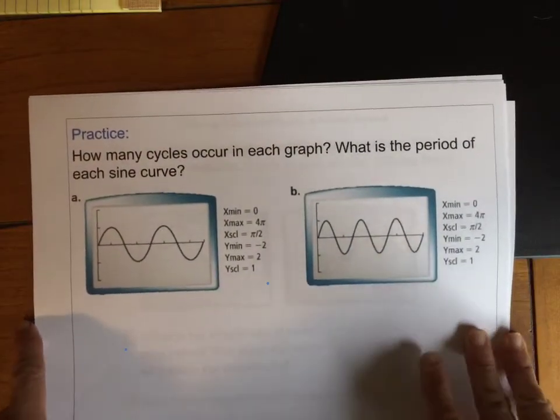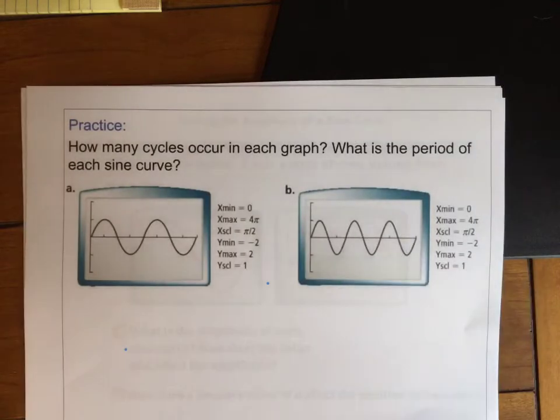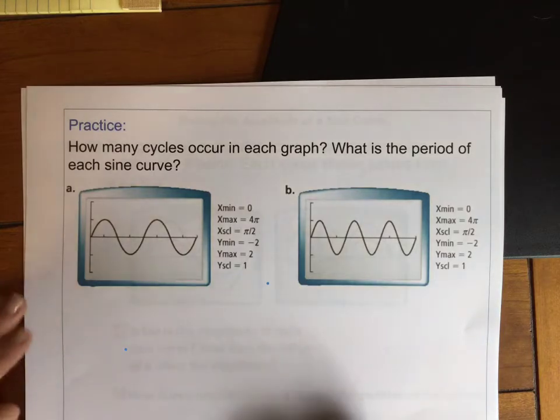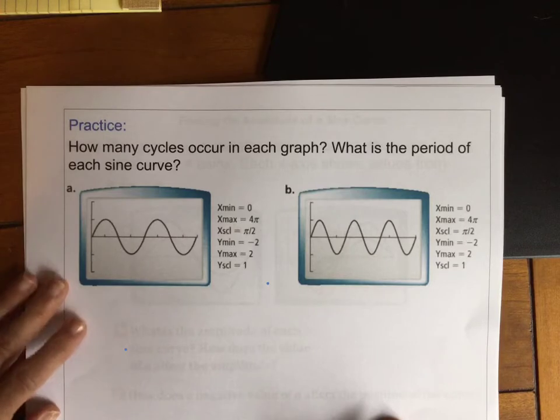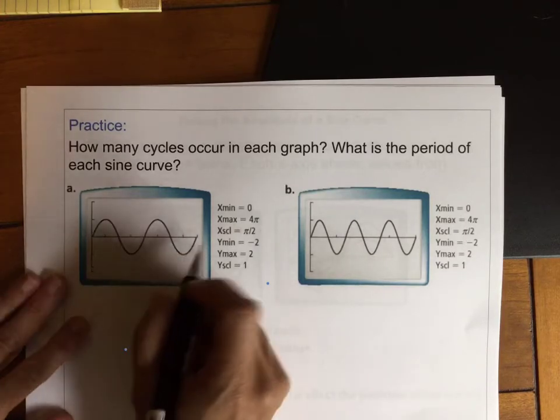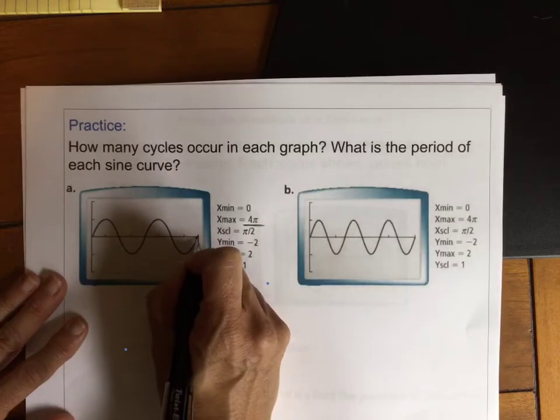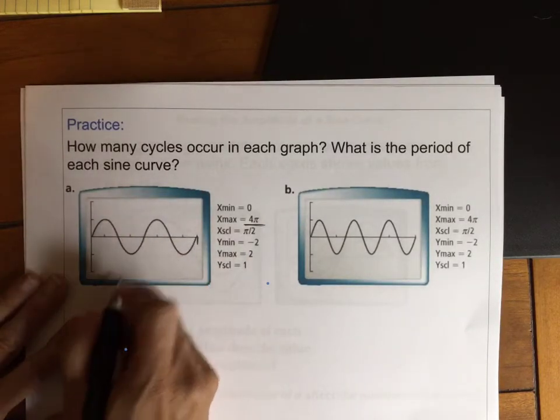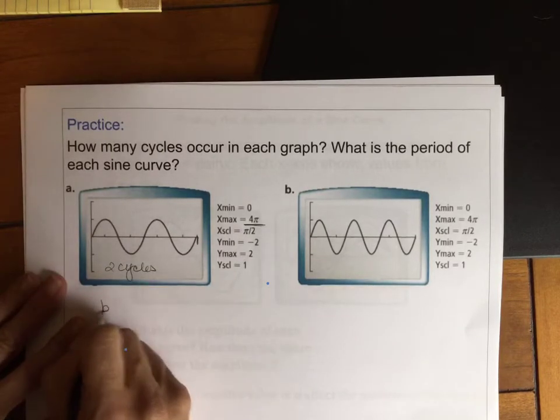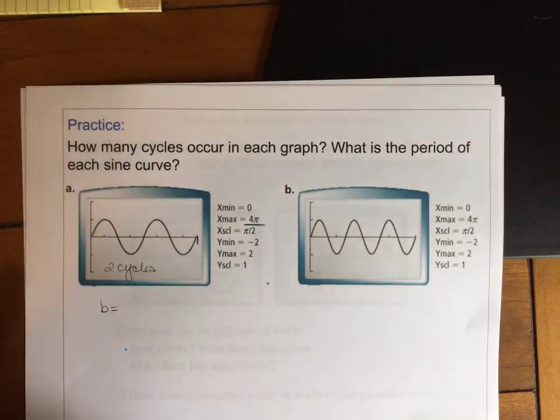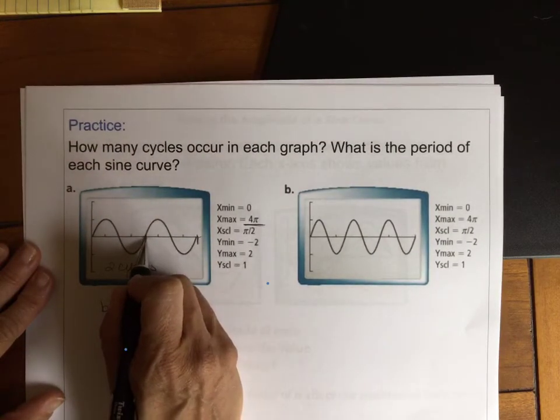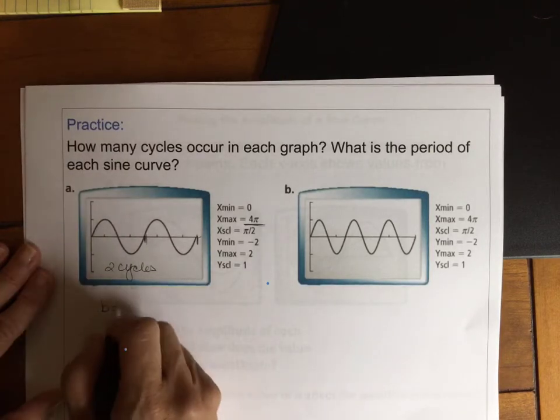Get ready to pause the video and take some time and see if you can answer these two questions at the top. All right. How many cycles occur in each graph? So we want to remember the definition of cycle is how many cycles between 0 and 2π. Notice that the max here is 4π. So there's two cycles in this graph. But B, which is the definition of how many cycles between 0 and 2π, if this is 4π, this is 2π halfway. So one cycle.